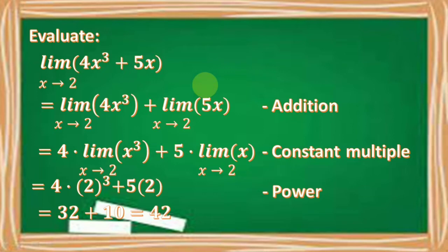Next, applying the constant multiple theorem, we multiply 4 by the limit of x cubed as x approaches 2 plus 5 times the limit of x as x approaches 2.